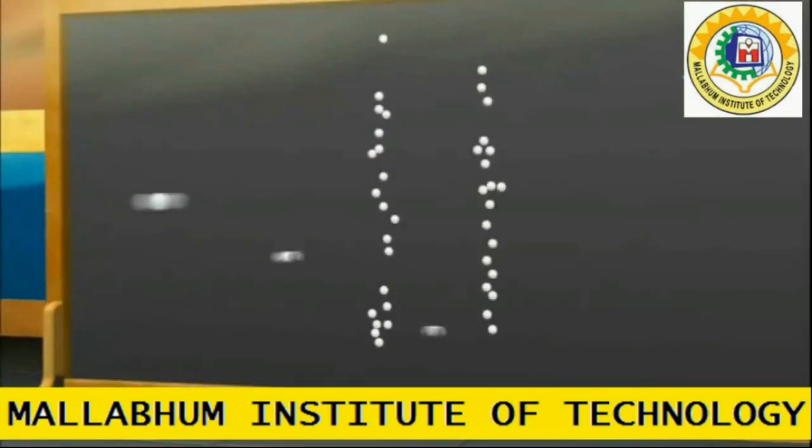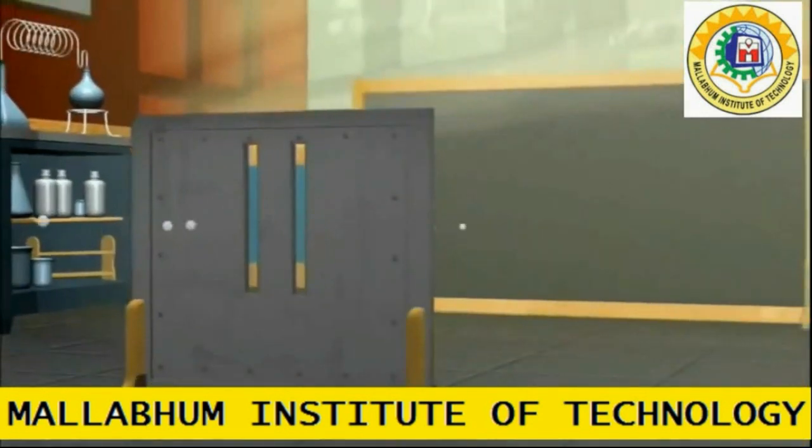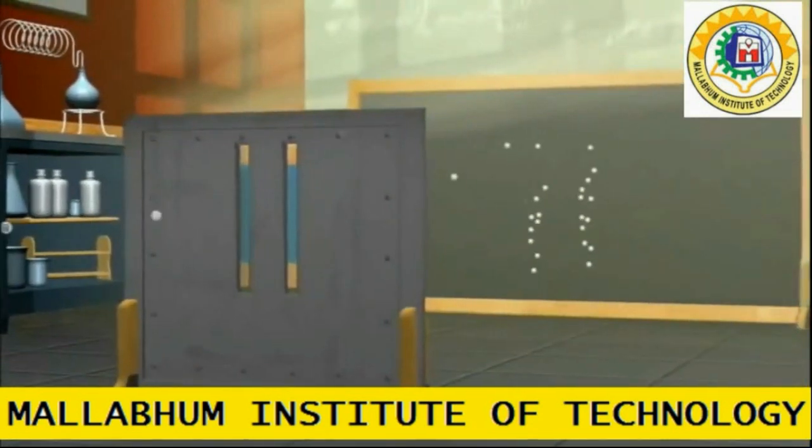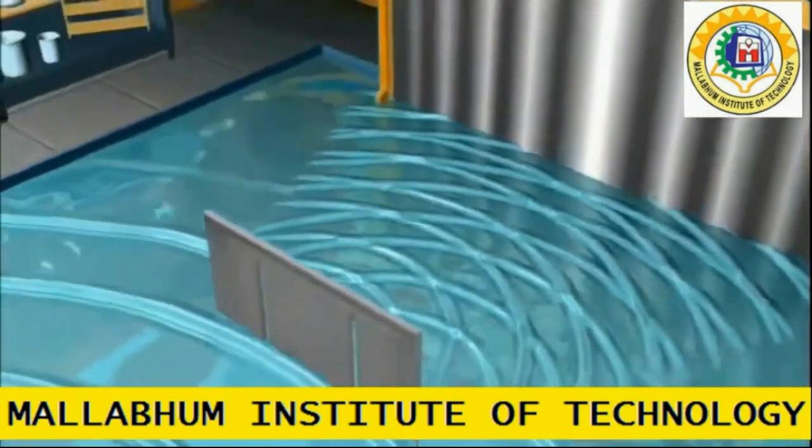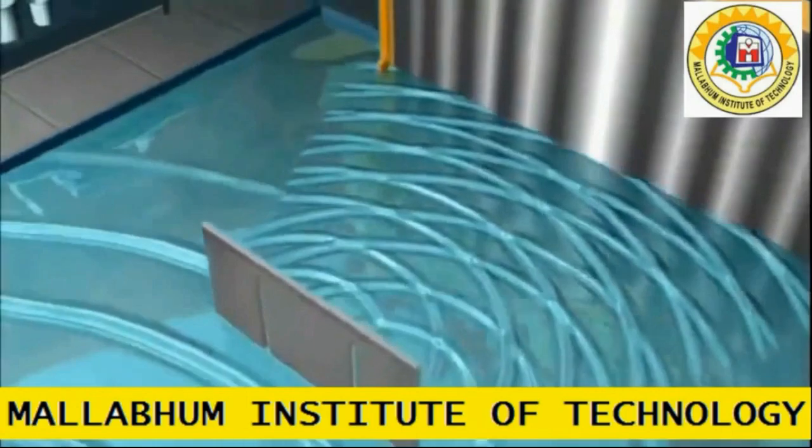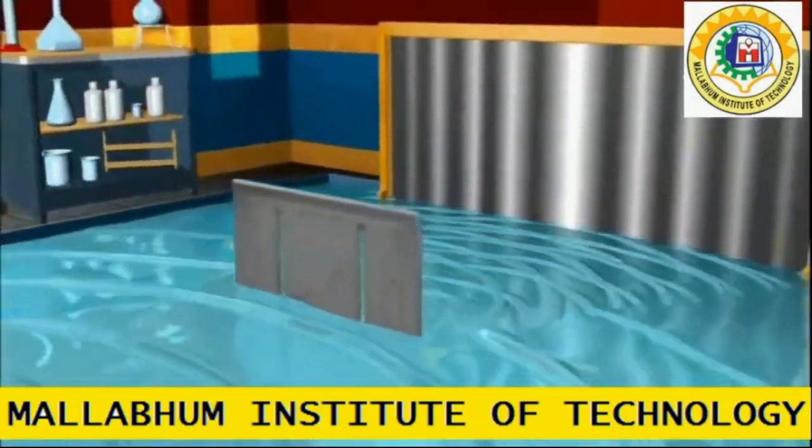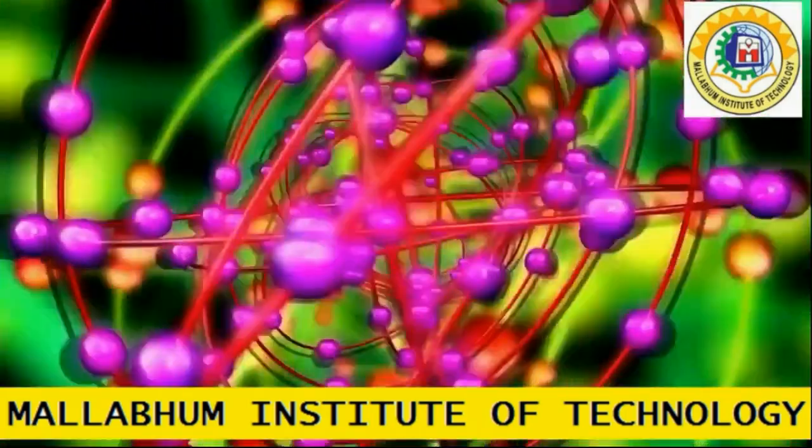Still now we understand that if we pass particle, that is the marble, through the slit, then we get two straight lines. But if we pass wave through the two slits, then we get the interference pattern or the number of straight lines. Now let's go to the quantum world to understand this.